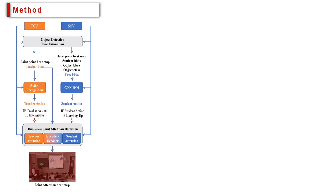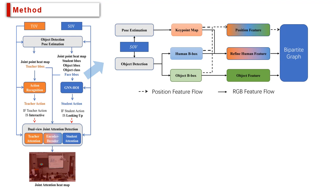Specifically, in the GNN-HOI, we initiate the human nodes, object nodes, and edges via the refined human feature, object feature, and pose feature to build the bipartite graph.